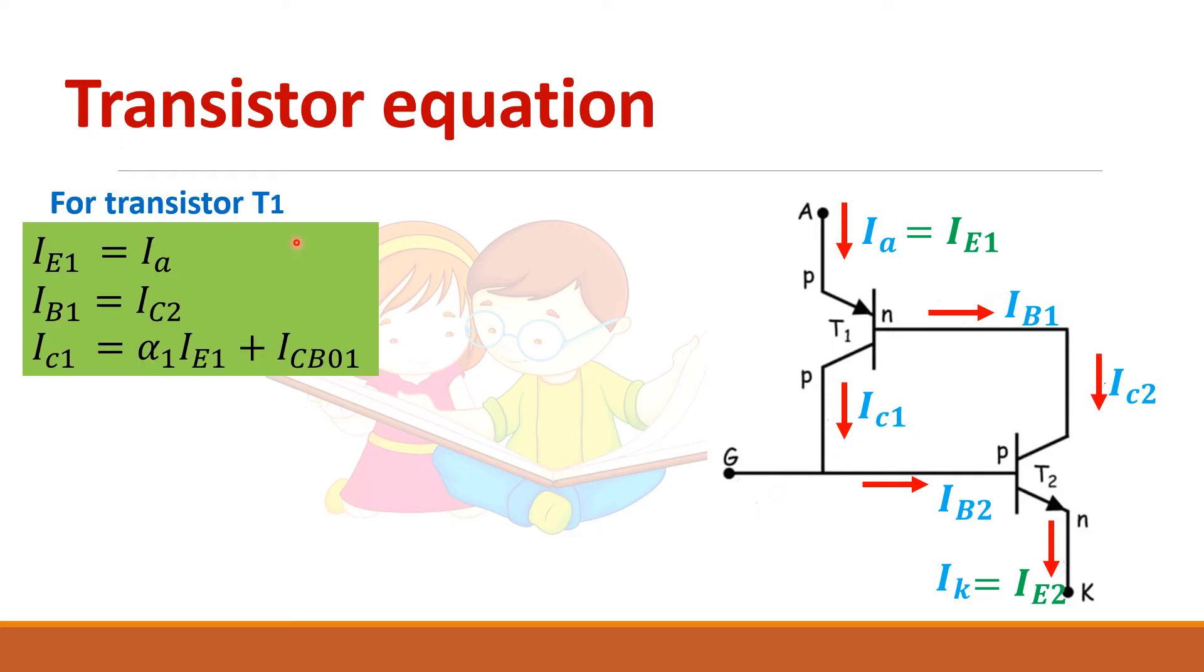So for transistor T1, what is the emitter current? It is nothing but the anode current. So what is the base current? It is equal to the collector current of transistor T2. What is the collector current? This equation you have seen in the previous slide. It is the normal off-state equation of the transistor. So alpha times IE1 plus leakage current.